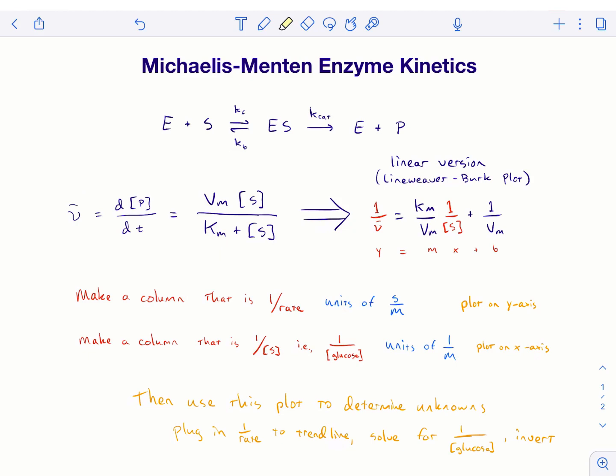And so, you can derive for some assumptions to get the rate of reaction is equal to this. And you could just do this, right? You could plug in your rate of reaction here. You could plug in glucose concentration. You could solve for things. But, it's a lot easier to do this with a straight line.